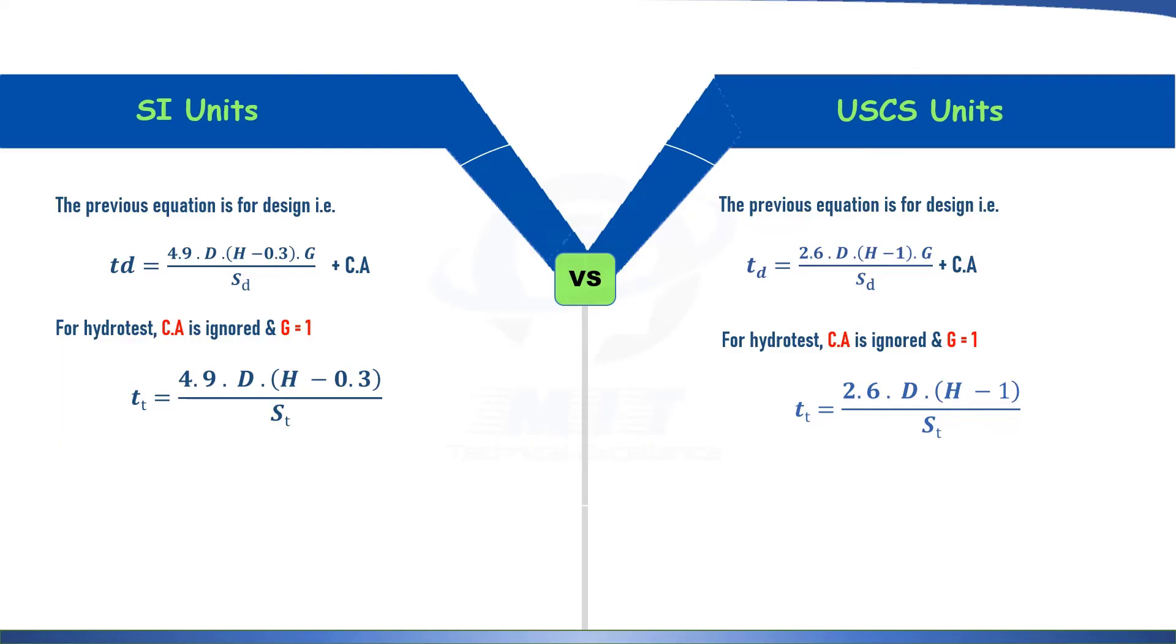Now one thing to note from this equation is that there is no internal pressure or P terminology in both these design and test condition equations in both units. And if we compare it with other codes like BS standard, in their thickness calculation, there is a term P or internal pressure above the column head in the equation. But API 650 ignores it due to very less value in comparison with static head. Hence we don't see a pressure P term in API 650 standard equation in comparison to BS standard.